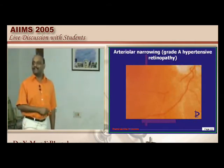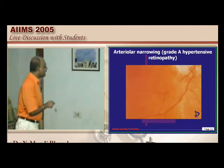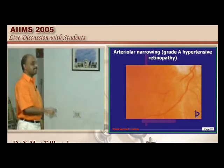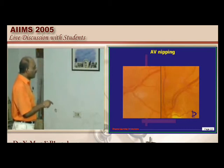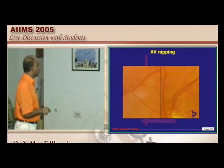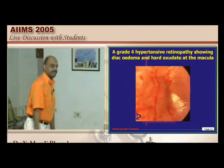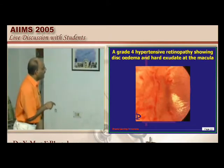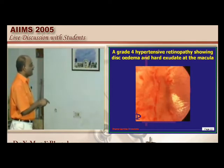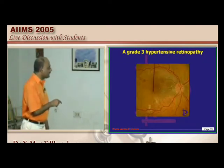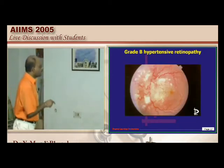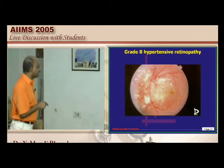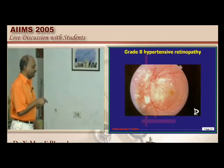Quiz on fundus grading: one fundus shows only attenuated arterioles — this is Grade 1 hypertensive retinopathy. Another shows arteriovenous nipping — classical AV nipping, Grade 2. Another shows hemorrhage with disc edema and hard exudate at the macula — Grade 4 hypertensive retinopathy. One fundus without disc blurring is Grade 3.